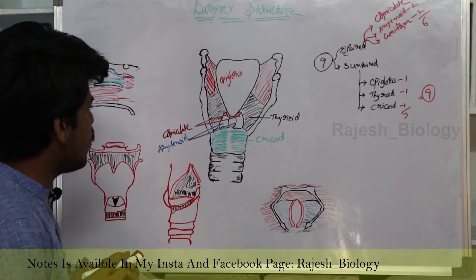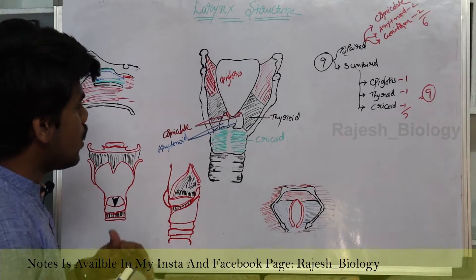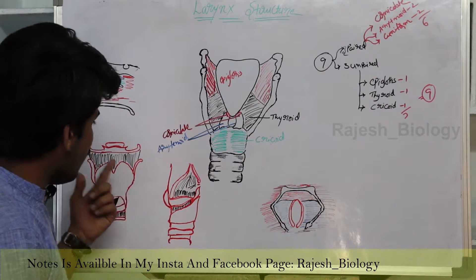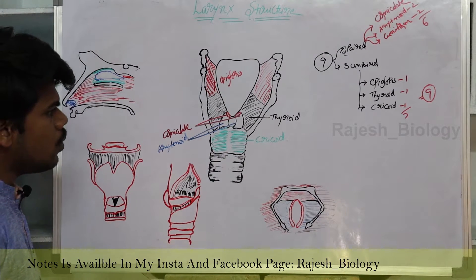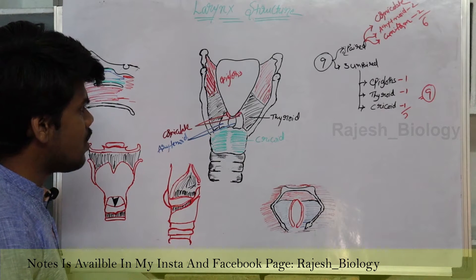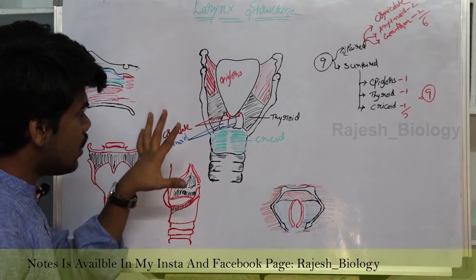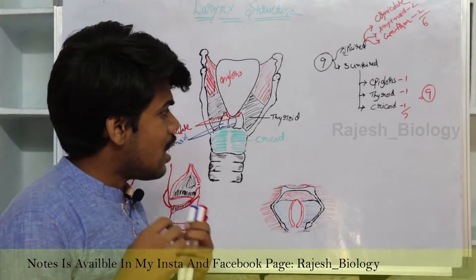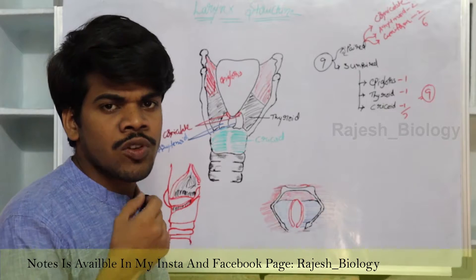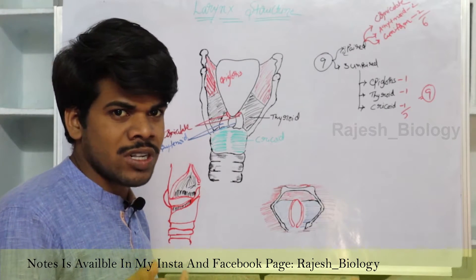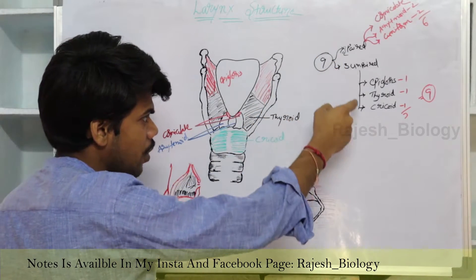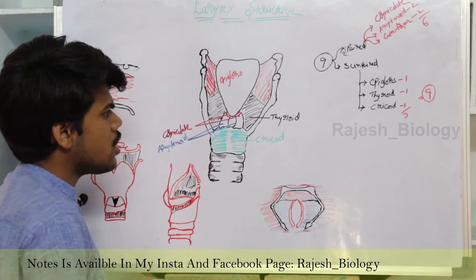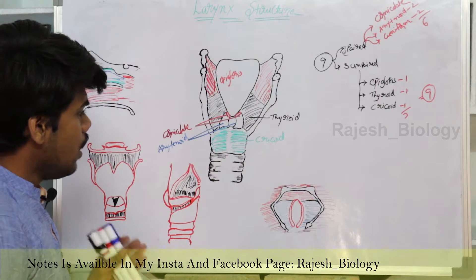The cuneiform cartilage is present behind the corniculate cartilage on the ventral side, and it is covered by the thyroid. There is another cartilage — the cuneiform cartilage — which is present behind the corniculate and arytenoid cartilages. These are the nine cartilages which support or form the larynx. The larynx is also known as voice box or sound box because voice is produced by the larynx, and it is covered by these nine cartilages — three unpaired: epiglottis, thyroid, cricoid, and three paired: corniculate, arytenoid, and cuneiform.